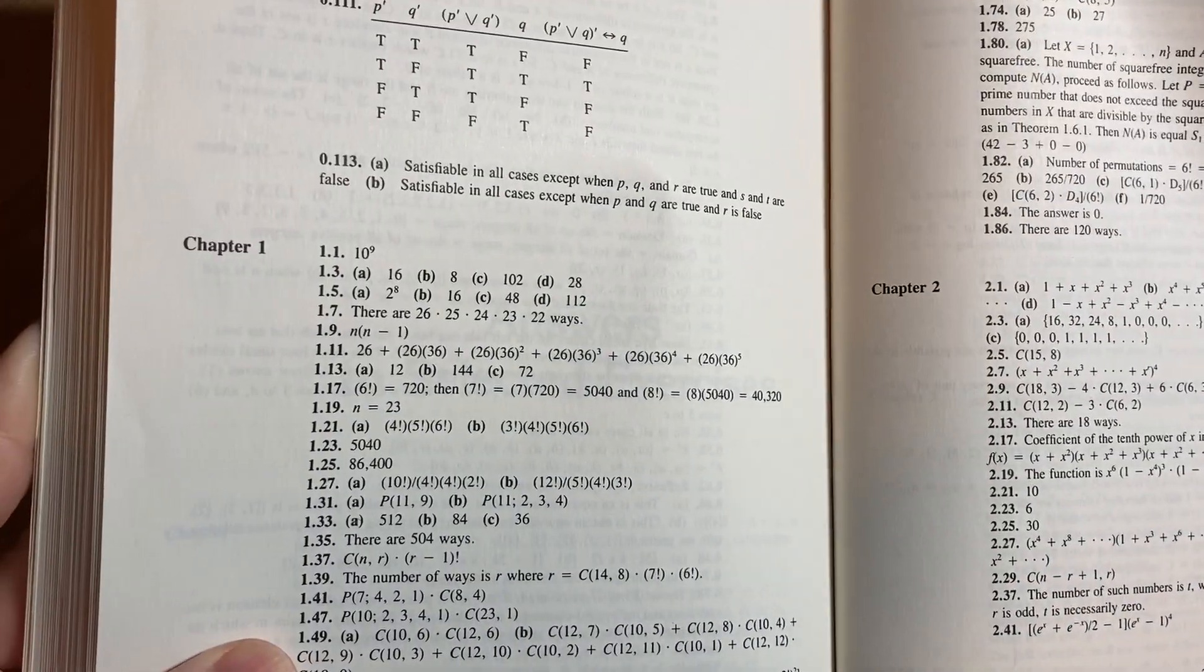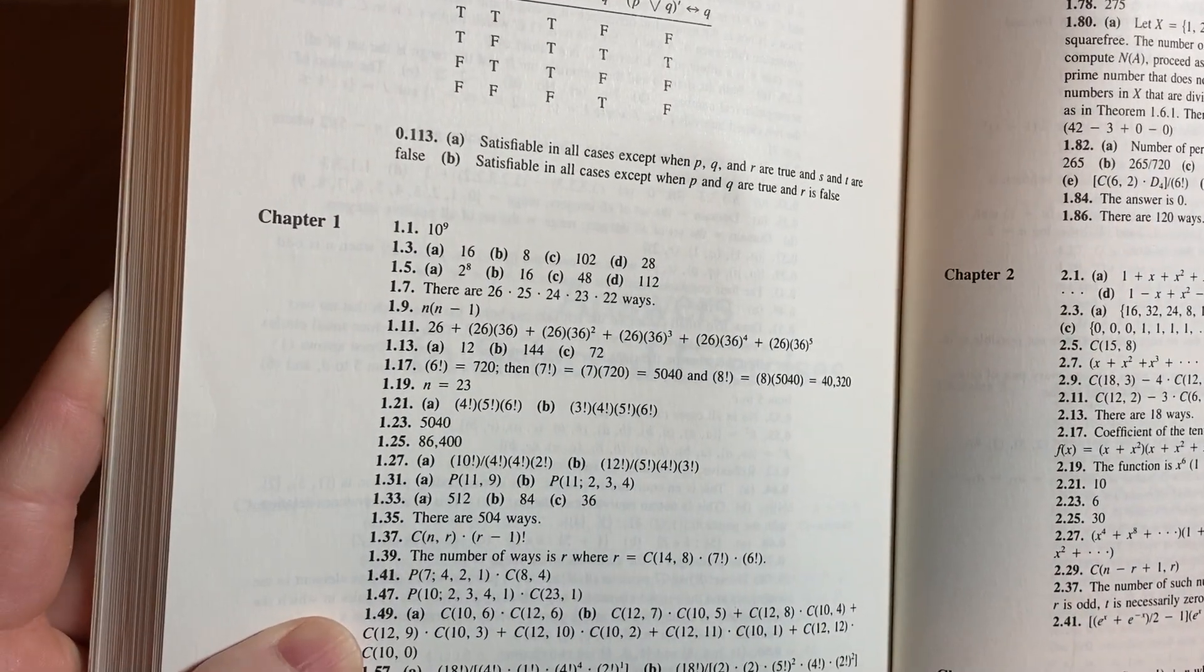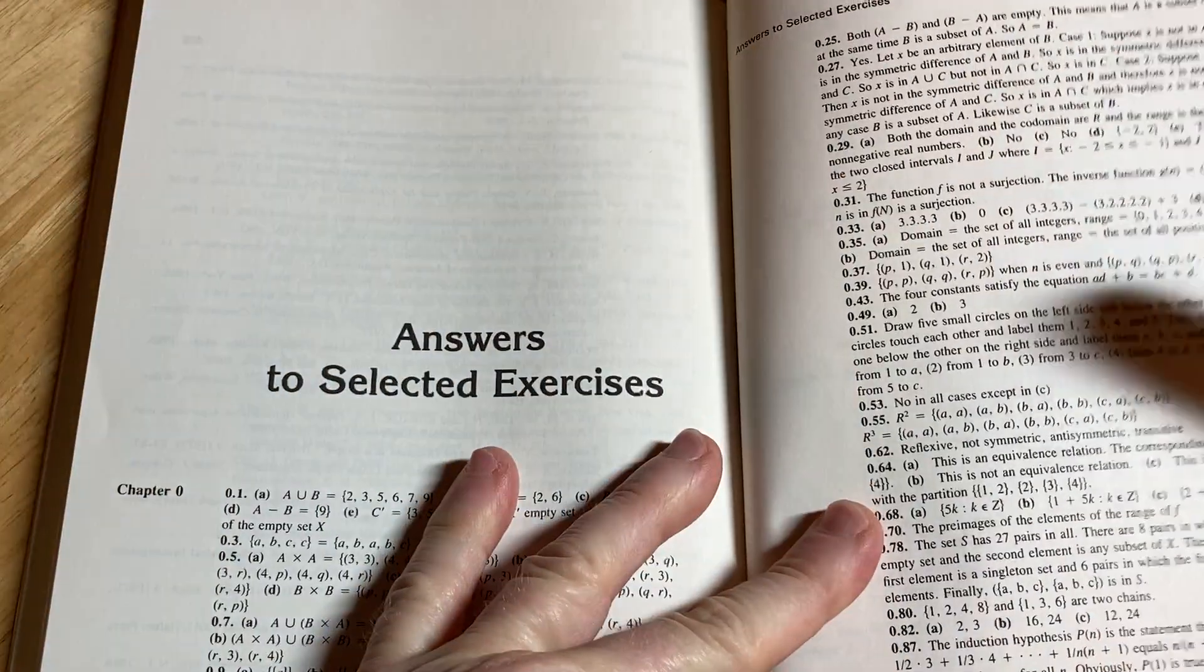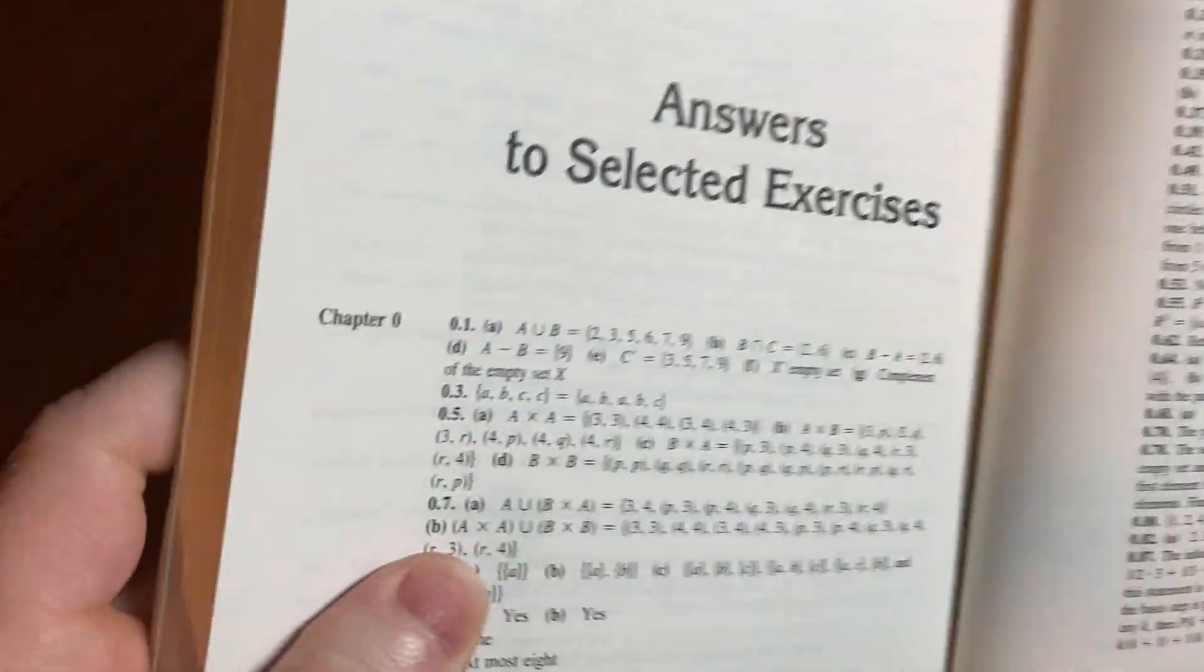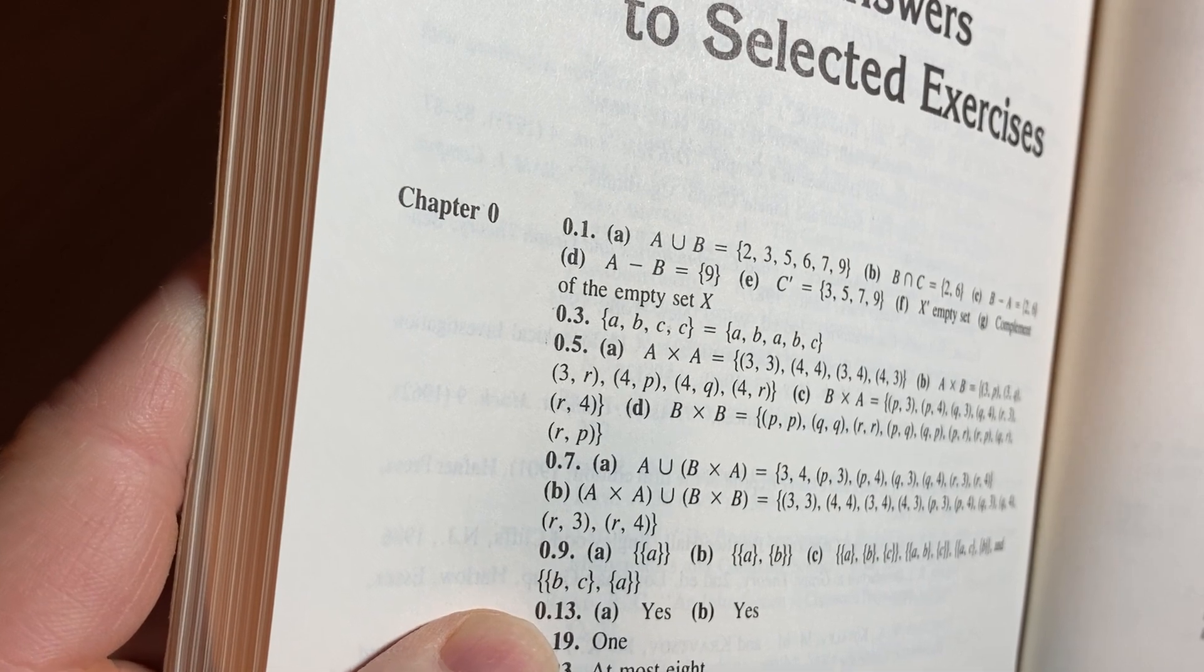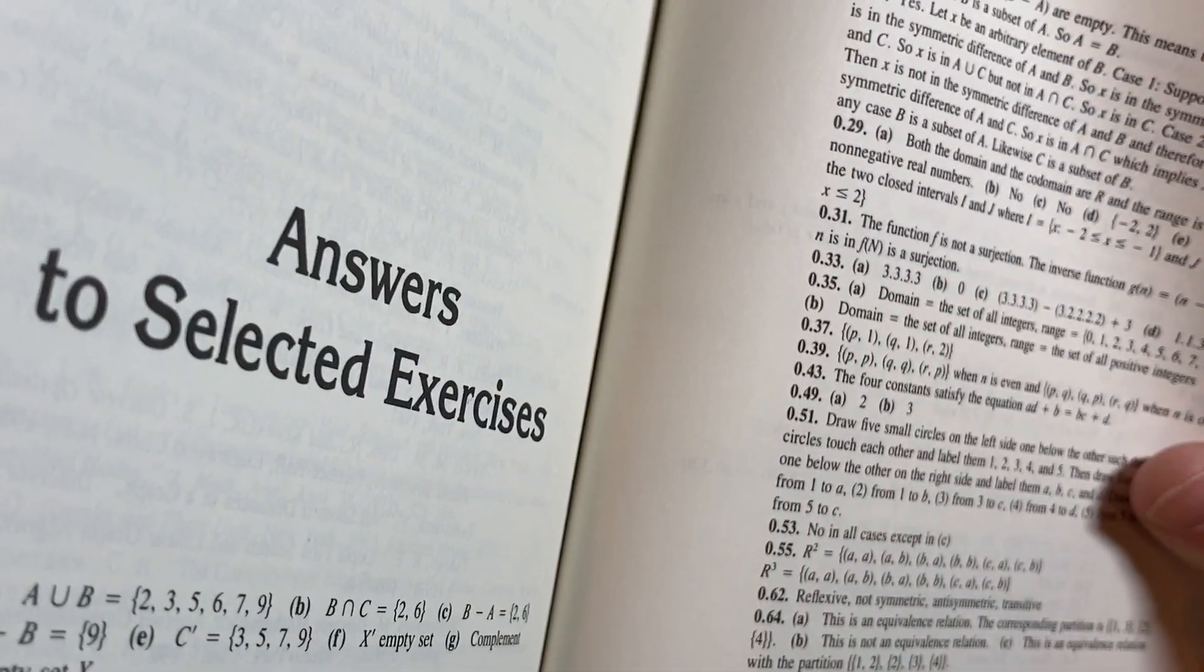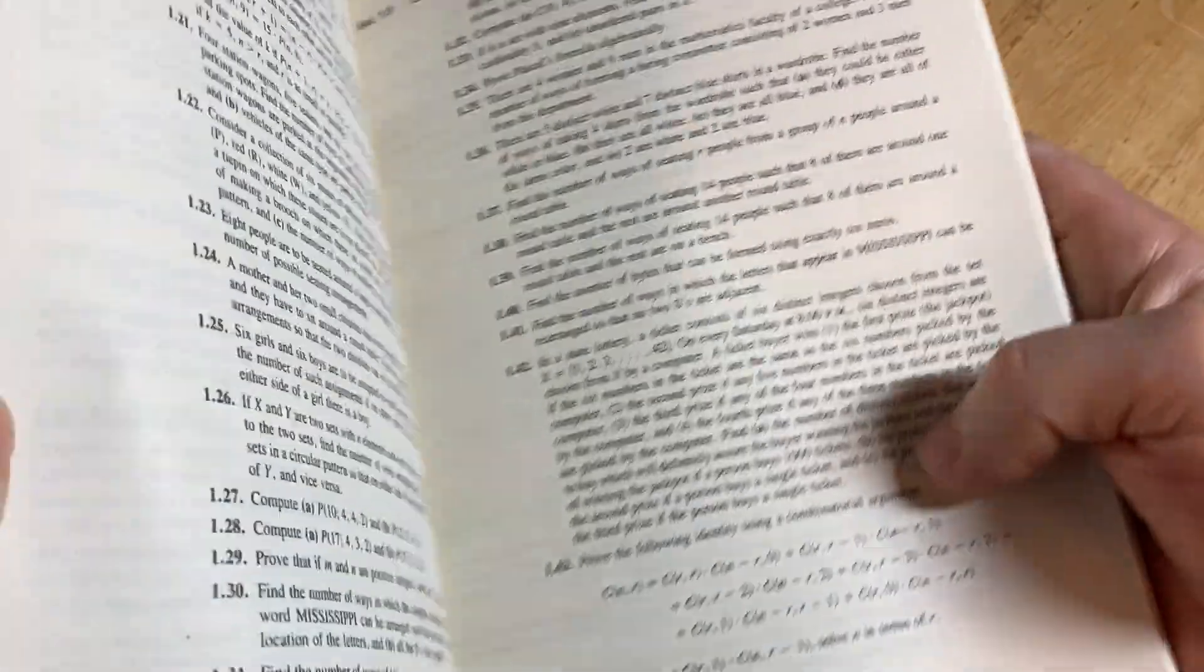You can see here it does have answers to what appears to be all the odd exercises, but it's probably not quite all of them. It just says selected, so there's probably a couple missing. But you can see here they did a really good job. For example, 11 is missing there. But plenty of answers for such a small book and an older book.